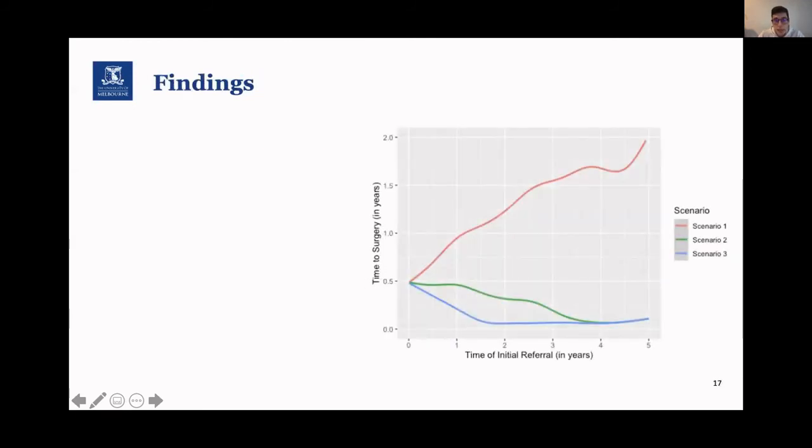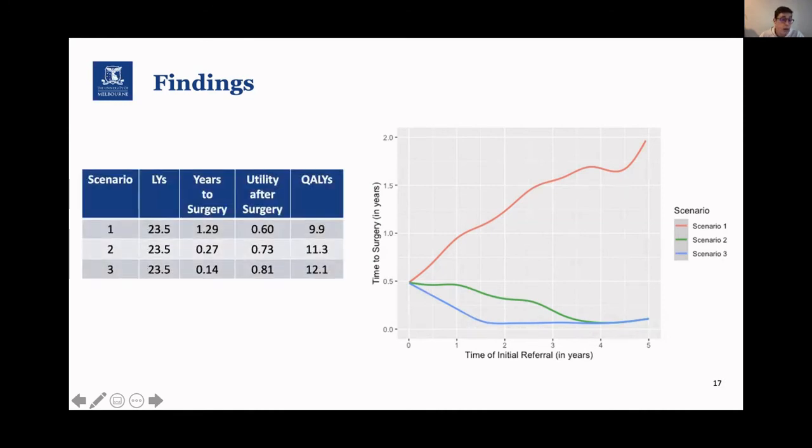As we can see here, this is the mean time to surgery in years. For scenario one, it continues to increase. And for scenario two, it slowly decreases over time. But for the third scenario, you can see a steep decrease, and at a certain time, it stays stable. And that has a profound impact on the quality-adjusted life years. Of course, the life years don't change because there is no change in background mortality. But due to the decrease in time to surgery, the utility after surgery improves as do the qualities.